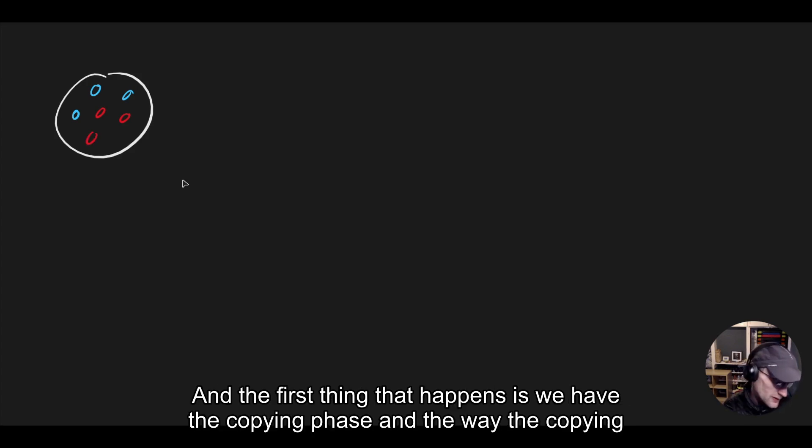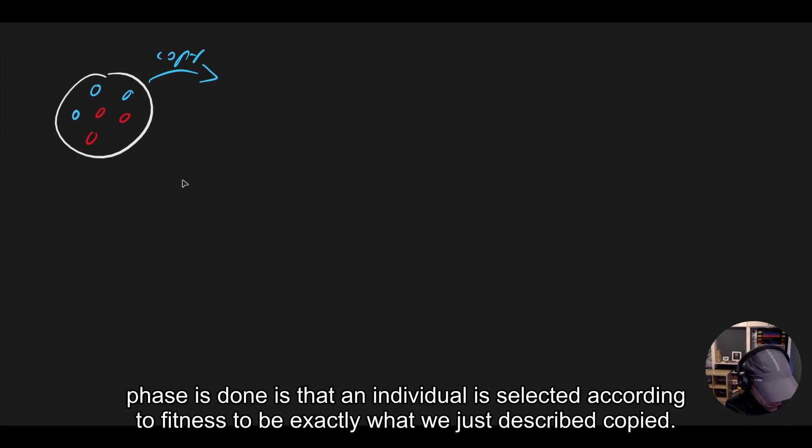The first thing that happens is we have the copying phase. The way the copying phase is done is that an individual is selected according to fitness to be exactly what we just described, copied.